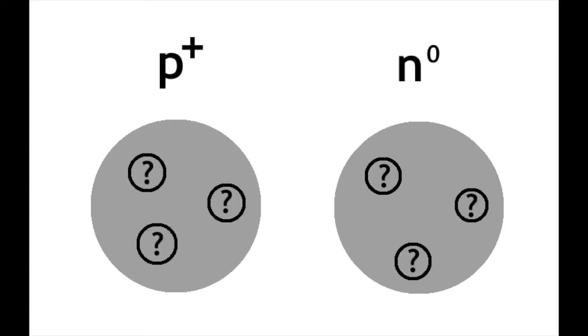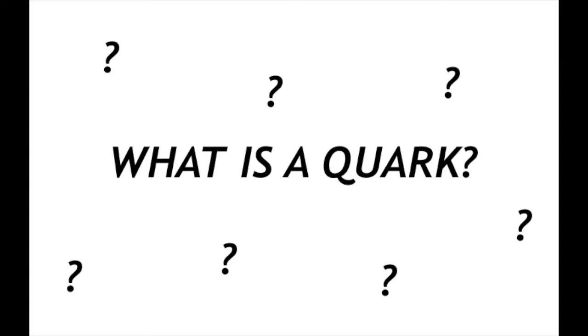In fact, they're made of three smaller particles called quarks. Wait a minute. What is a quark? Well, that's a great question. How do you explain what a quark is? Let's start here.